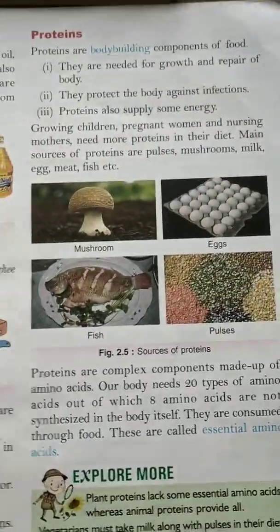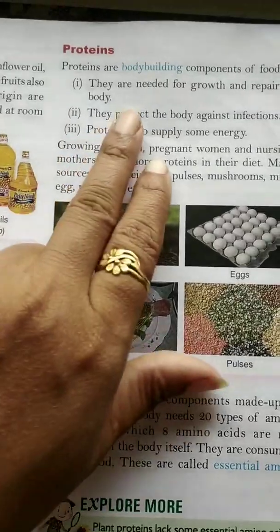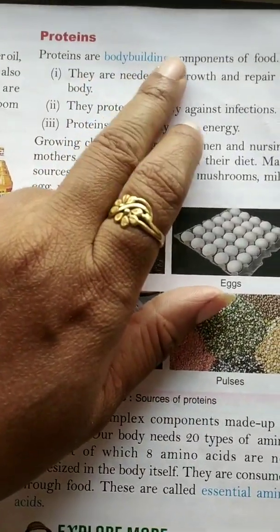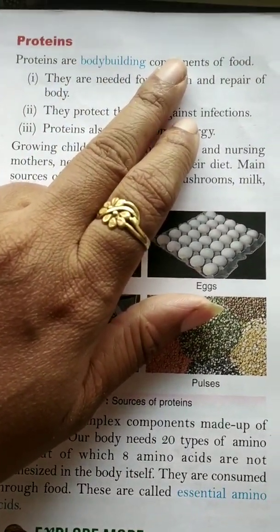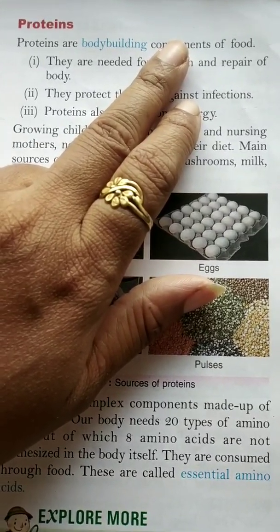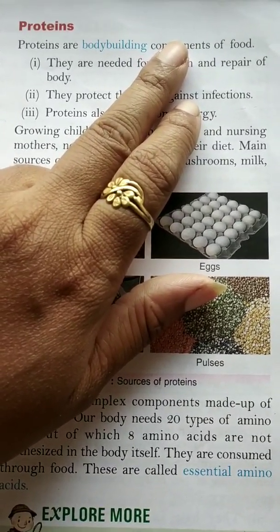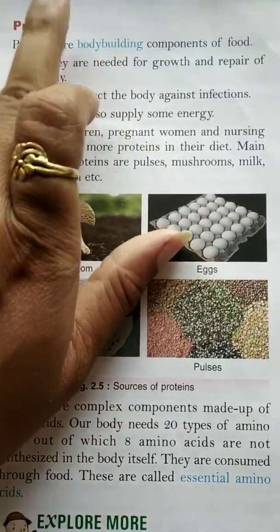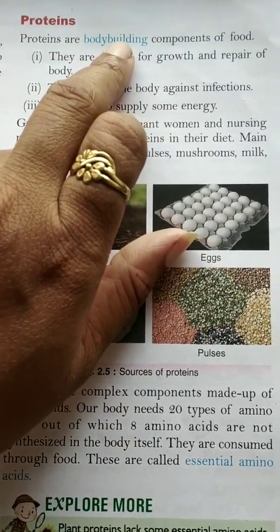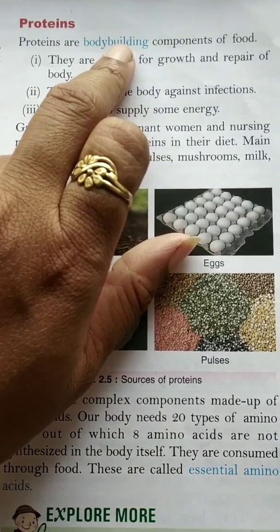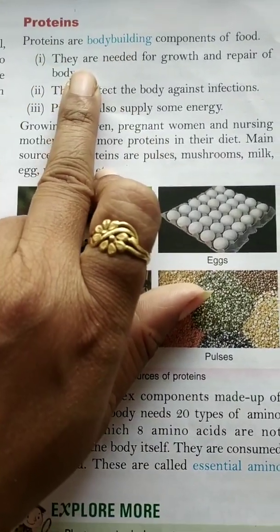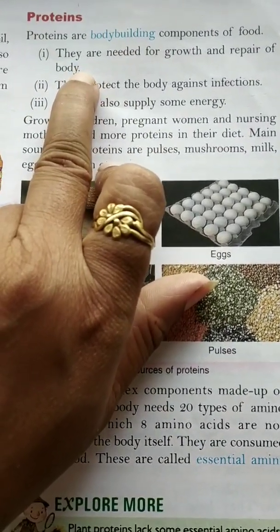Now the next one is protein. Proteins are the body-building components of the food, whereas carbohydrates and fats were the energy-giving components. Proteins are needed for the growth and repair of the body.